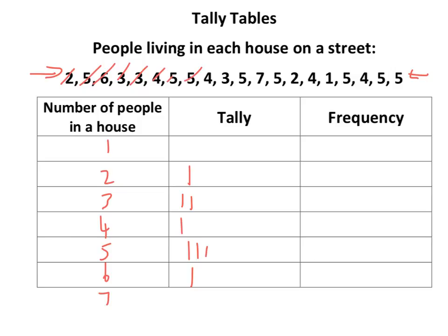Going through: five, five, another four, three, five, seven — and now another five. In order to make counting up the tally easier, when we get to five we use the 'gate' system — a diagonal line across four marks to make a bundle of five. Then we've got a one, another five, a four, and two more fives.